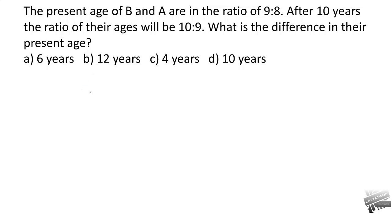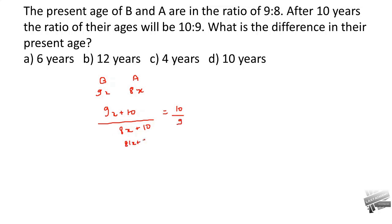The present ages of B and A are in the ratio of 9 to 8, so let their ages be 9x and 8x. After 10 years the ratio becomes 10 to 9: (9x plus 10) to (8x plus 10) equals 10 to 9. Solving gives 81x plus 90 equals 80x plus 100, so x equals 10. The difference in present ages is 9x minus 8x equals x equals 10.